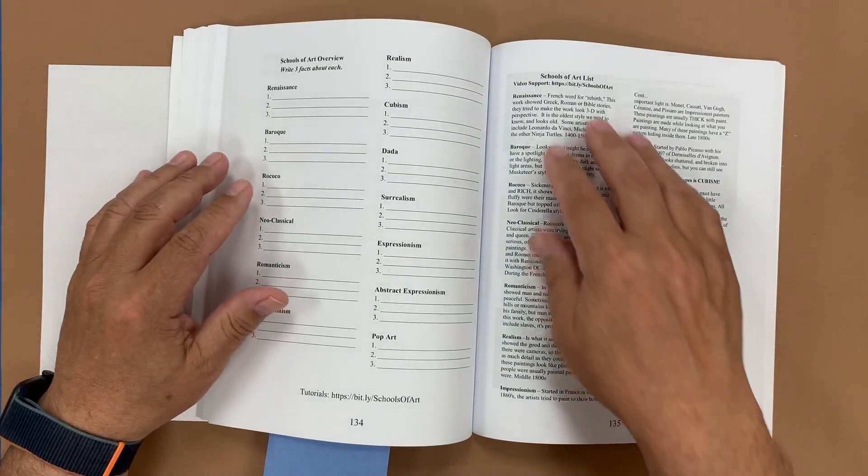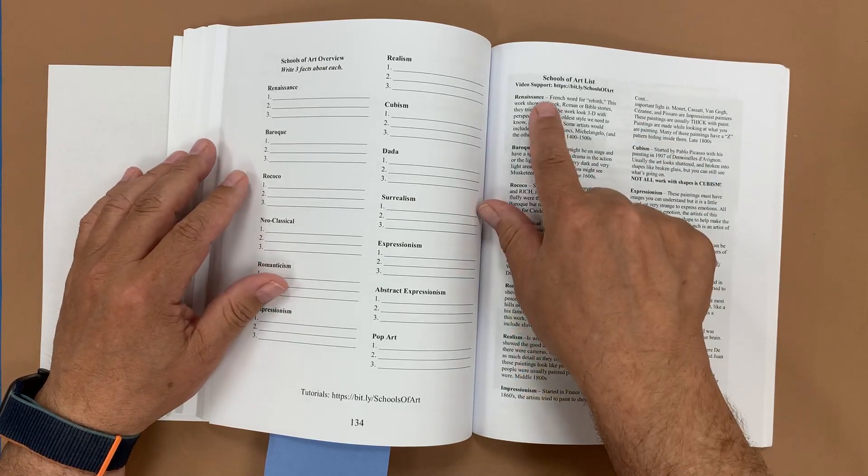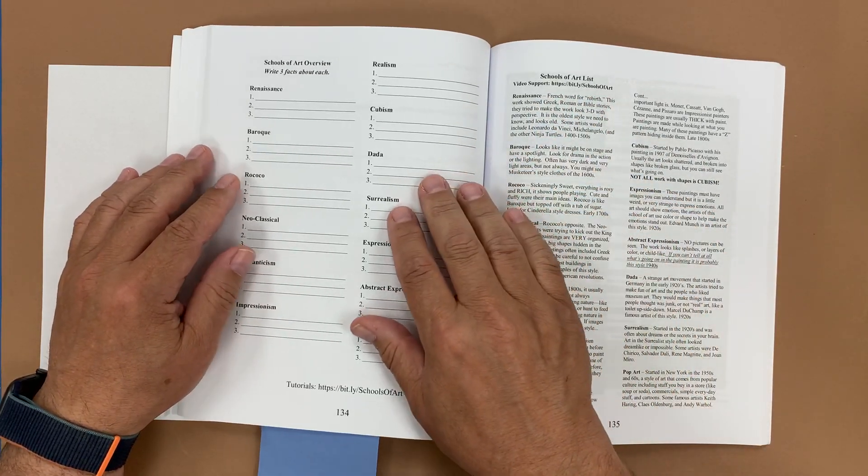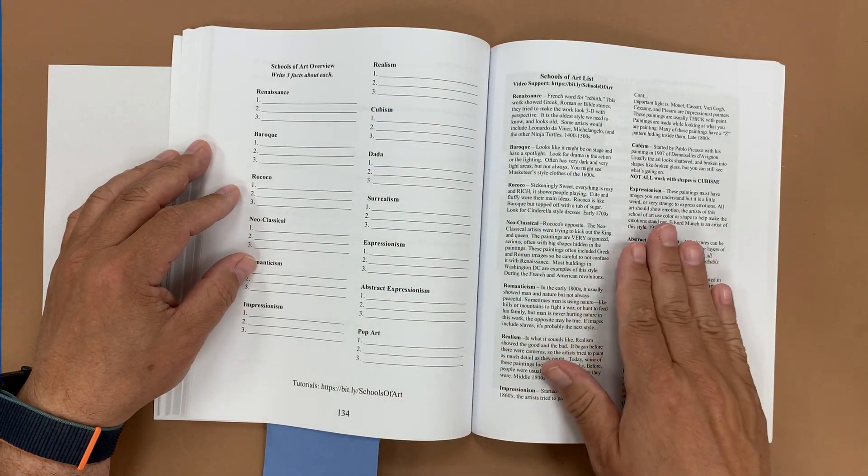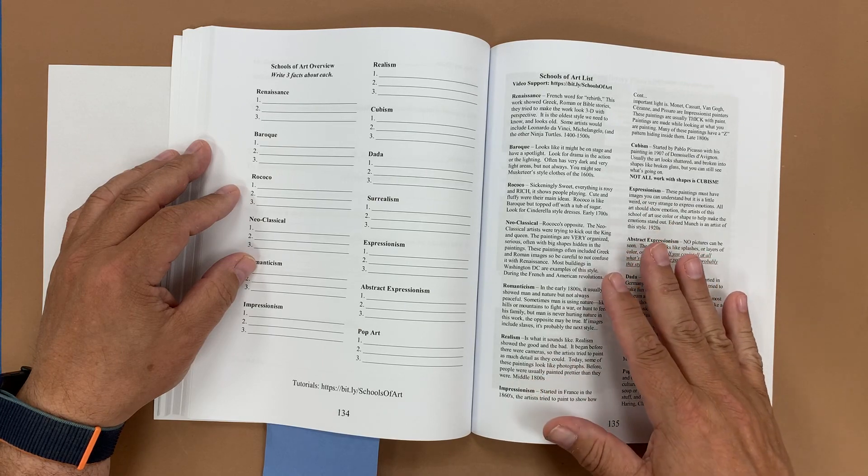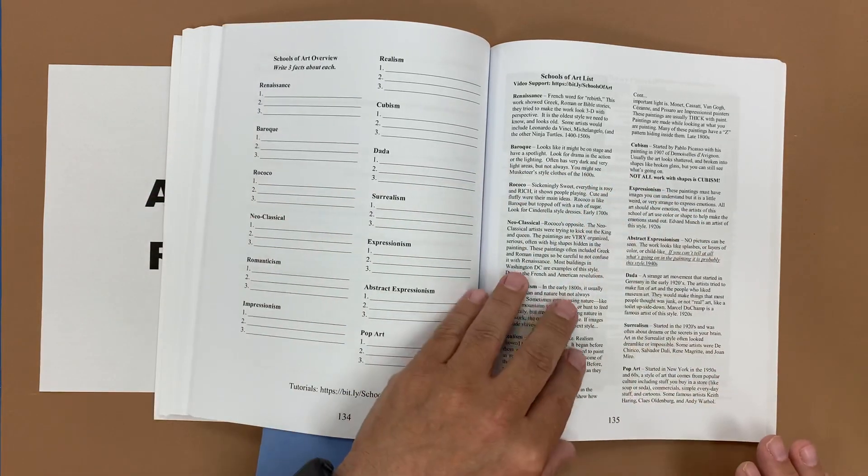Then I have a synopsis of the schools of art here and how to identify them as you see them. Again video support pages are there and while they watch the video they can write three facts about each school of art and then this is helpful for my 504 IEP students so if their notes are incomplete the information is also available here.